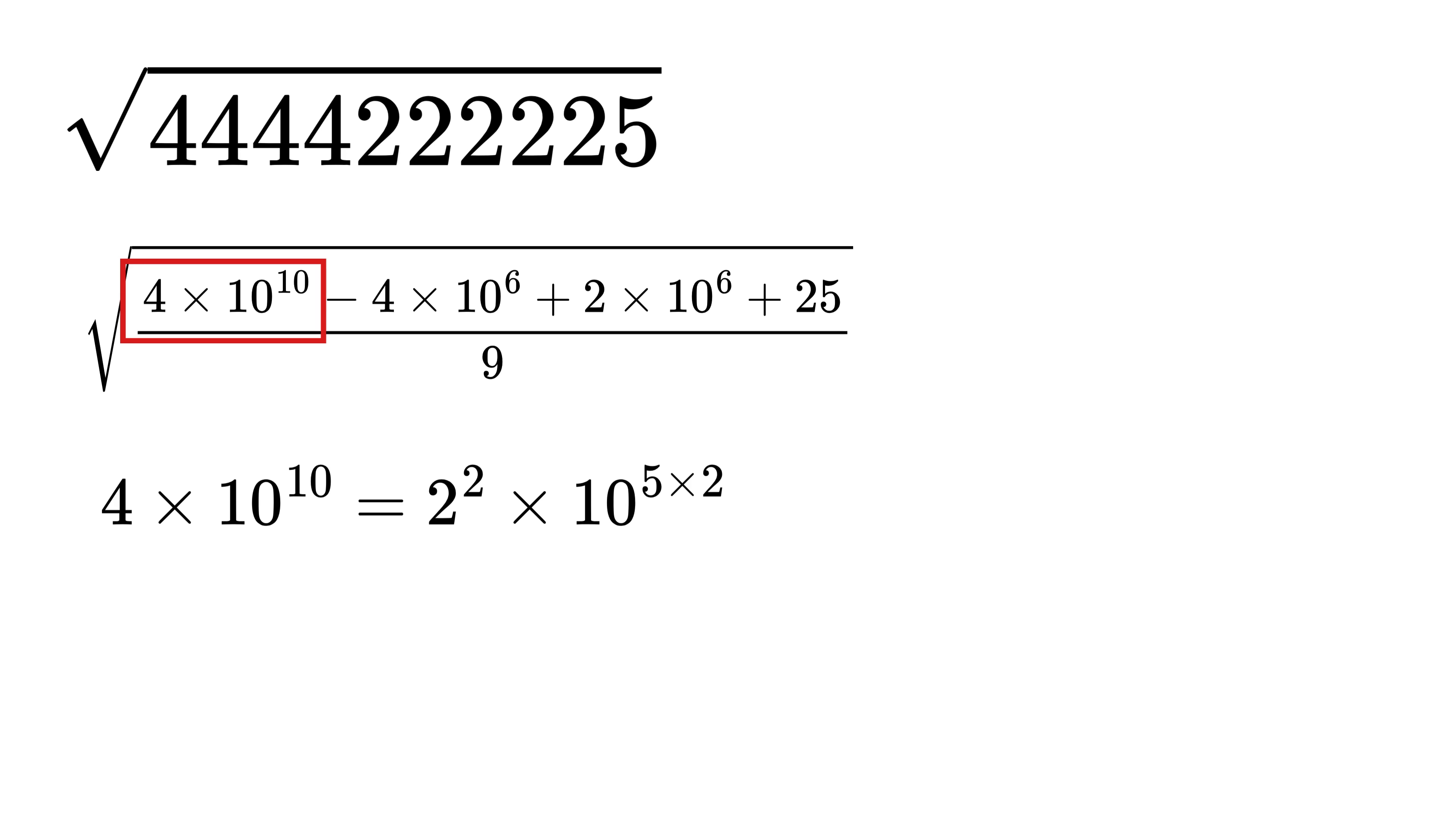Consider this number - we can write 4 as 2 squared, and 10 raised to 10 as 10 raised to 5 times 2. But a raised to m times n is the same as a raised to m whole raised to n, so 10 raised to 5 times 2 is the same as 10 raised to 5 whole square.